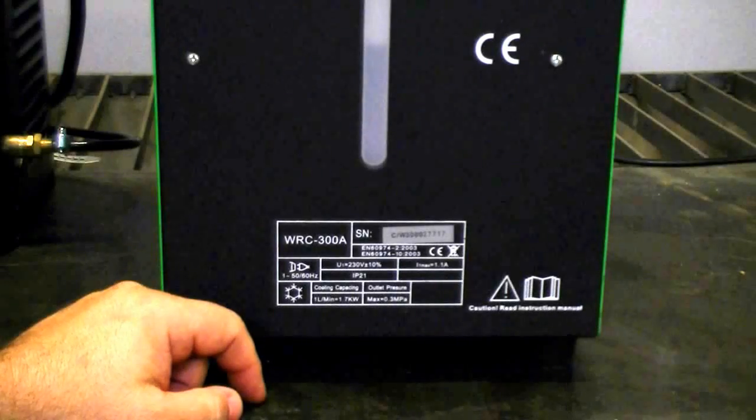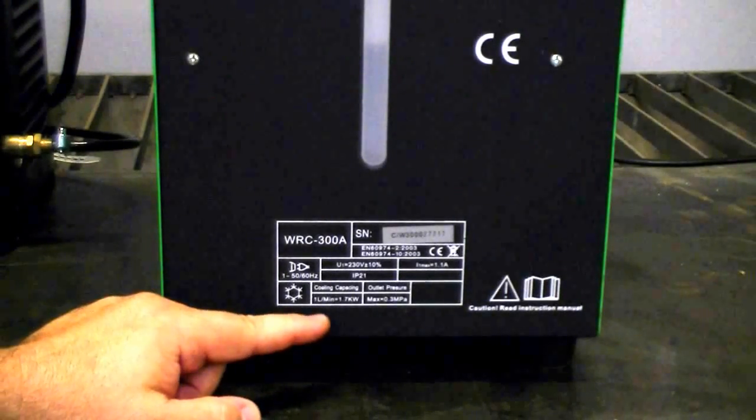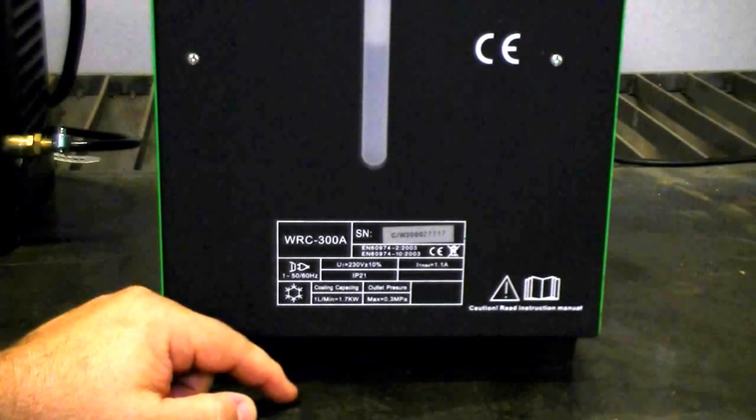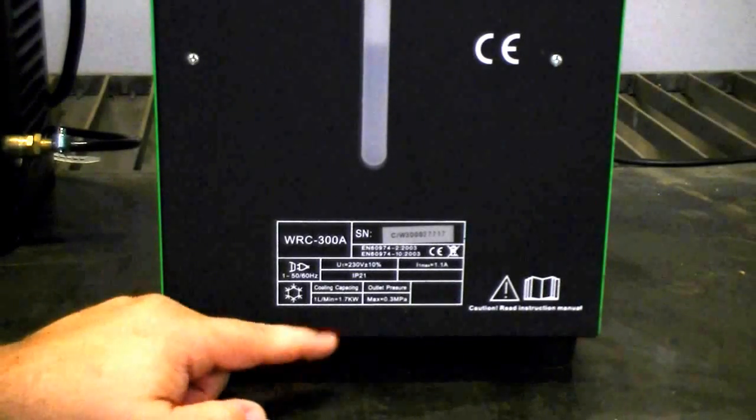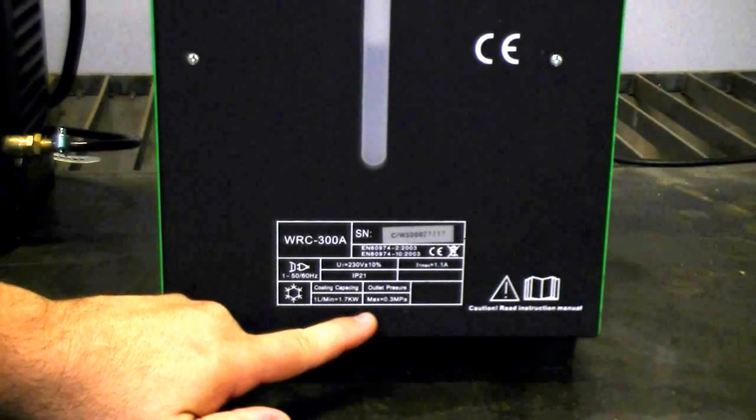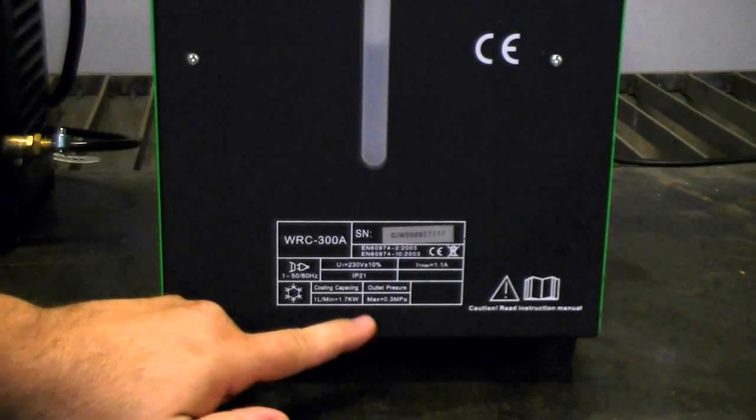This unit has a cooling of about 1 liter per minute. That's enough to get you about 1.7 kW worth of cooling. It also has a pressure of about 0.3 MPA, or that's about 45 psi.